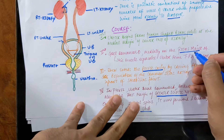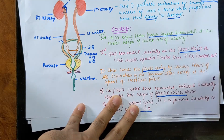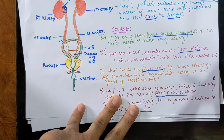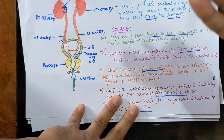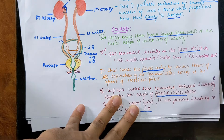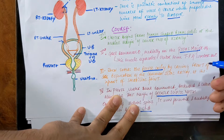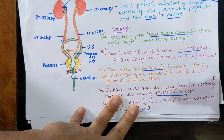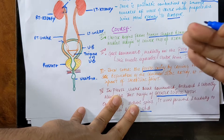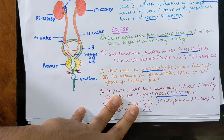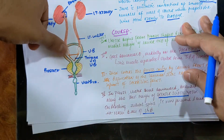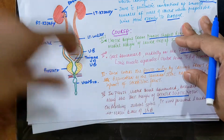It goes downward and medially on the psoas major. The psoas major will be present on the posterior of the ureter — so on the posterior relation you have psoas major. The ureter crosses above the psoas major on its medial side, and this muscle actually separates the ureter from the transverse process of the lumbar vertebra. So the ureter also passes lateral to the transverse process of the lumbar vertebra.